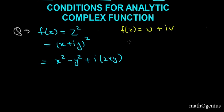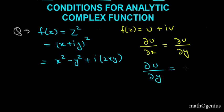Now we know that this was the form u plus iv, and the Cauchy-Riemann equations were ∂u/∂x equals ∂v/∂y, and ∂u/∂y equals minus ∂v/∂x. Let's find if these are true or not.